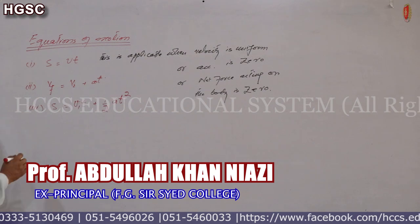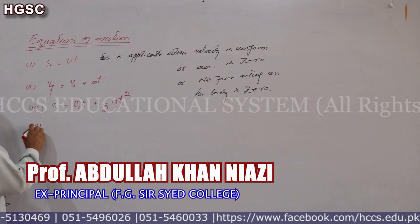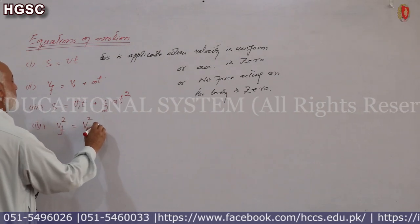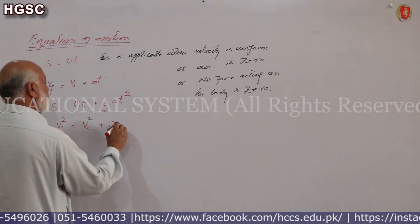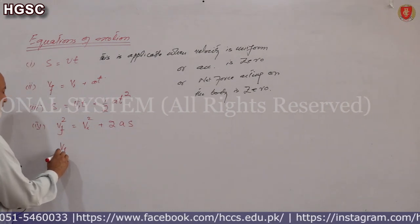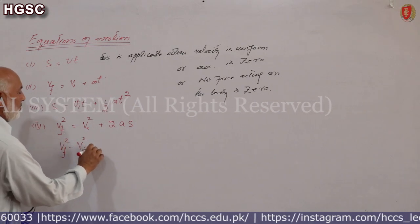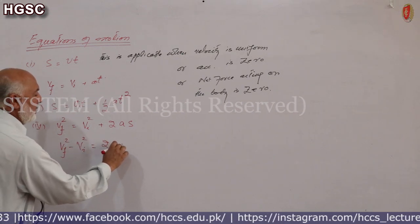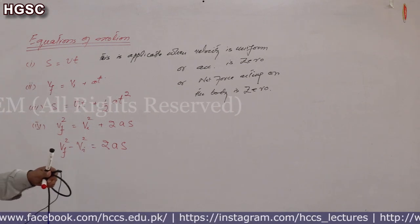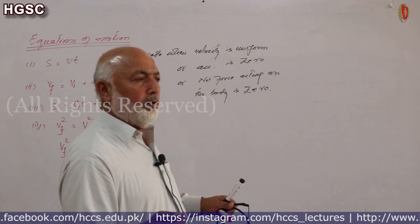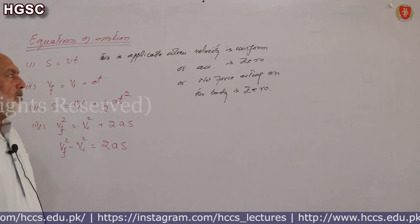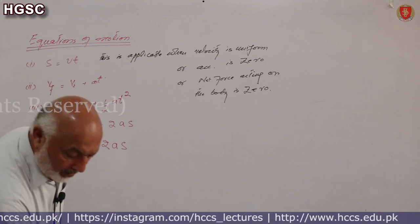Chauthi equation hai: vf² = vi² + 2as, jise is tarah bhi likh sakte hain: vf² - vi² = 2as. Yeh equations numerical ke andar istemal hone wali equations hain jinhe hum physics ki equations of motion kehte hain. Equations of motion ke baad hamare paas Newton ke laws hain, wahi jo aapne matric mein padhe hain.